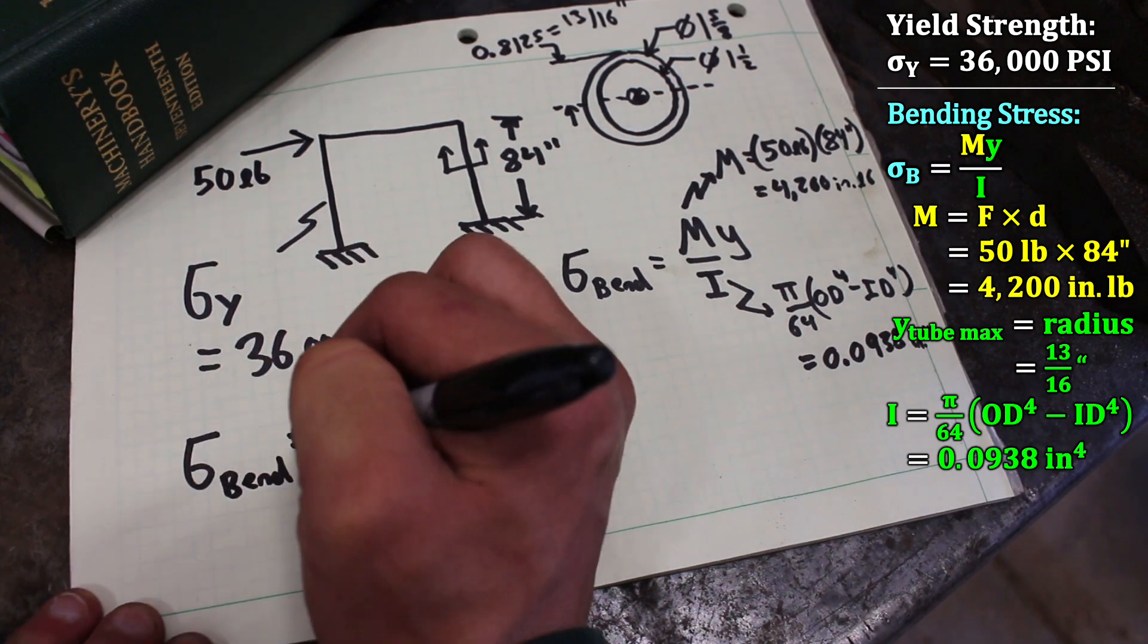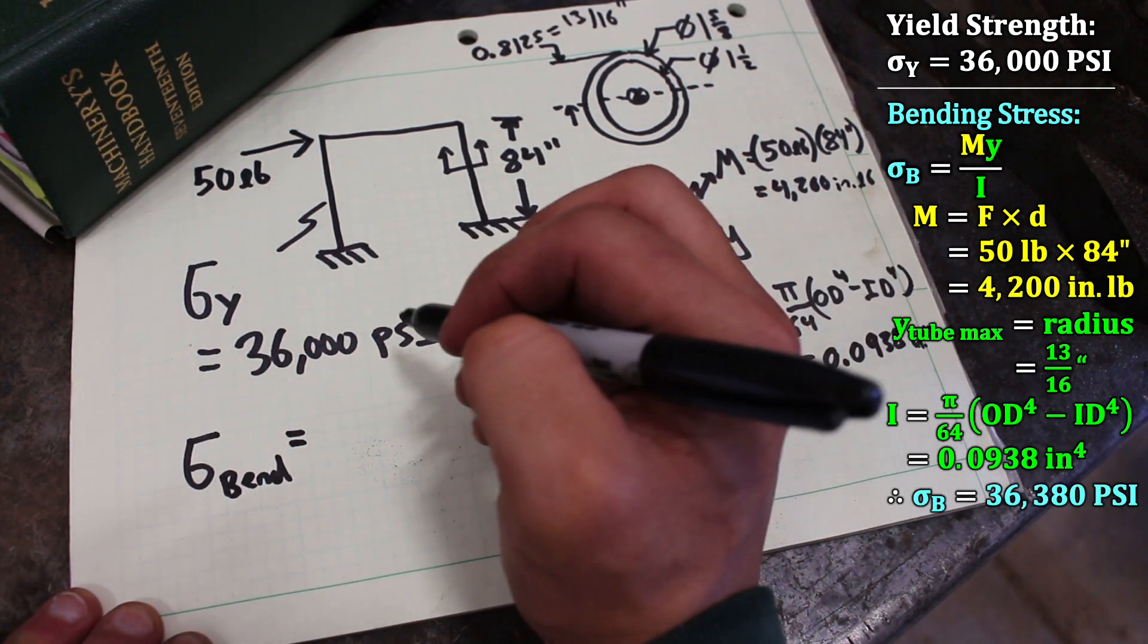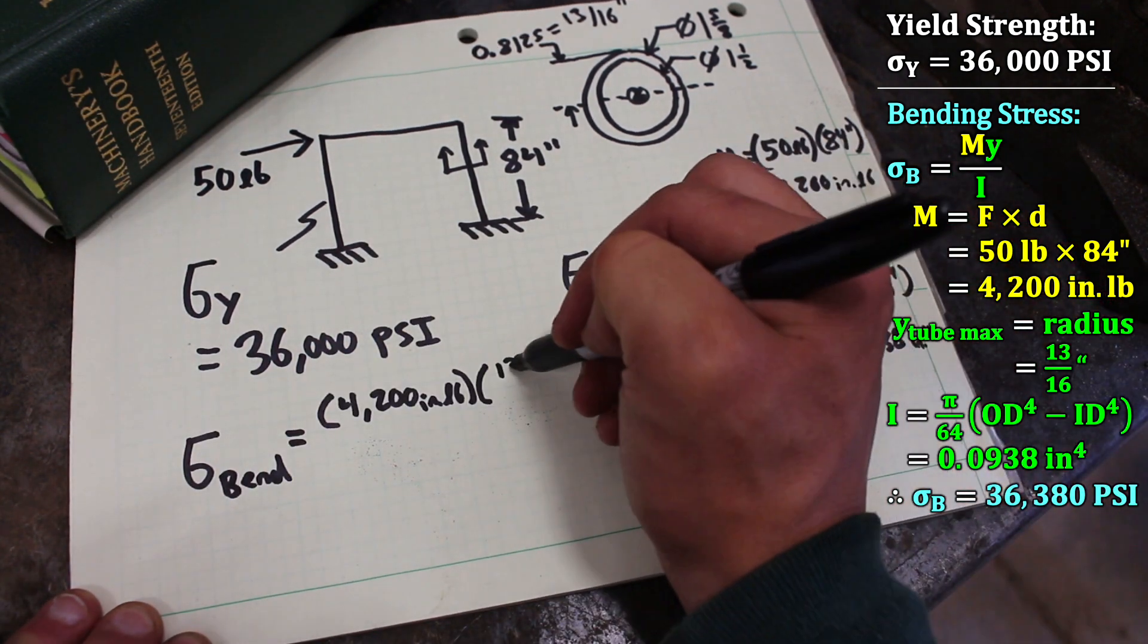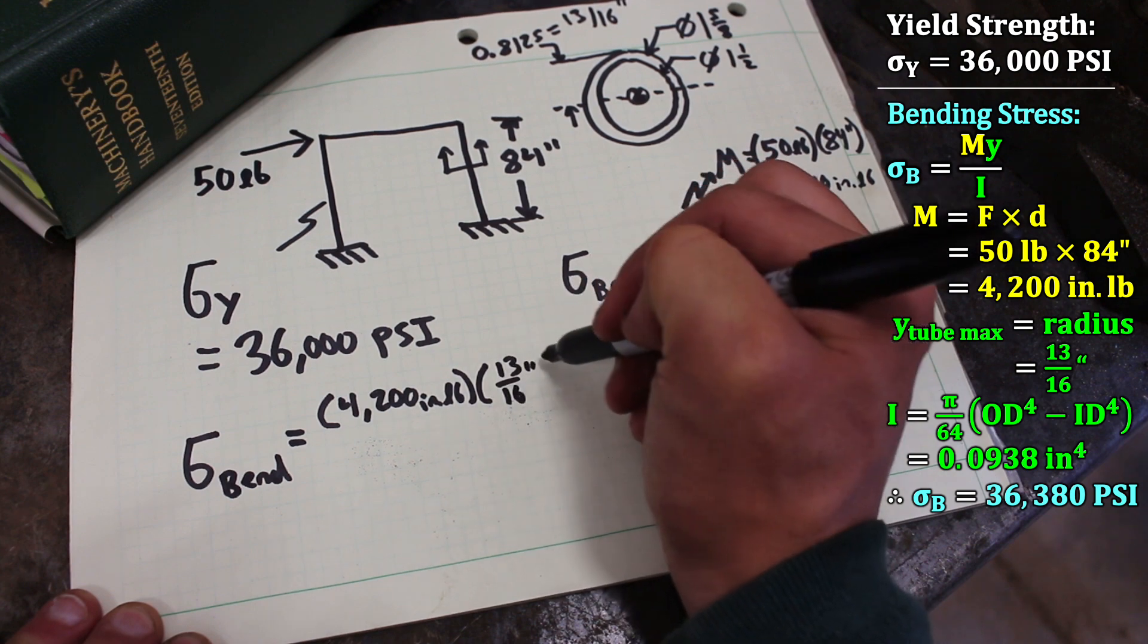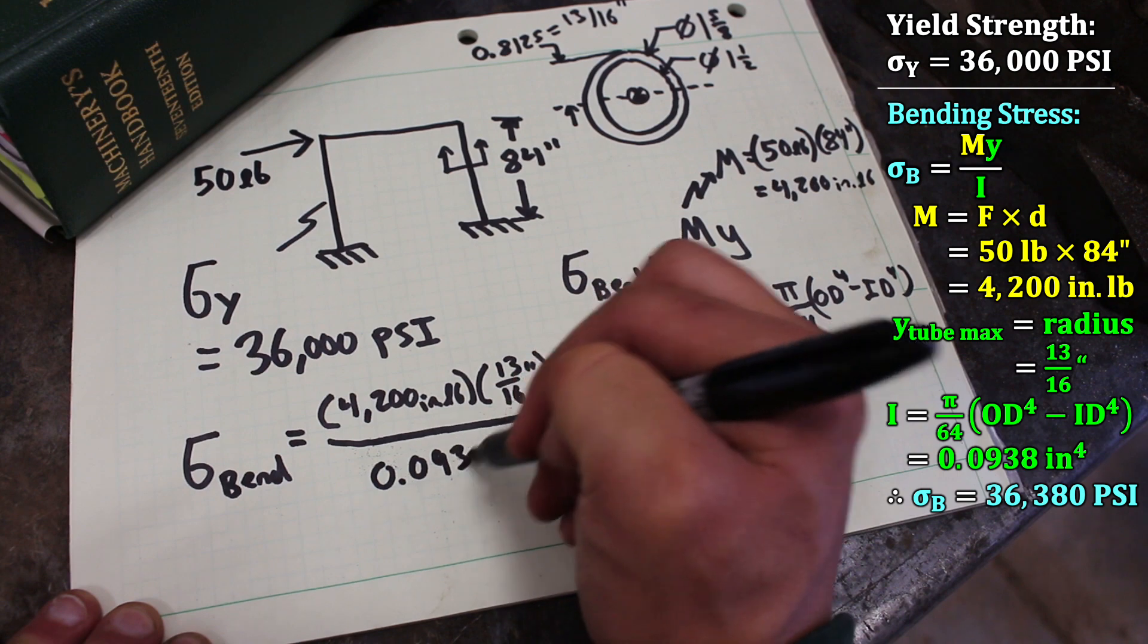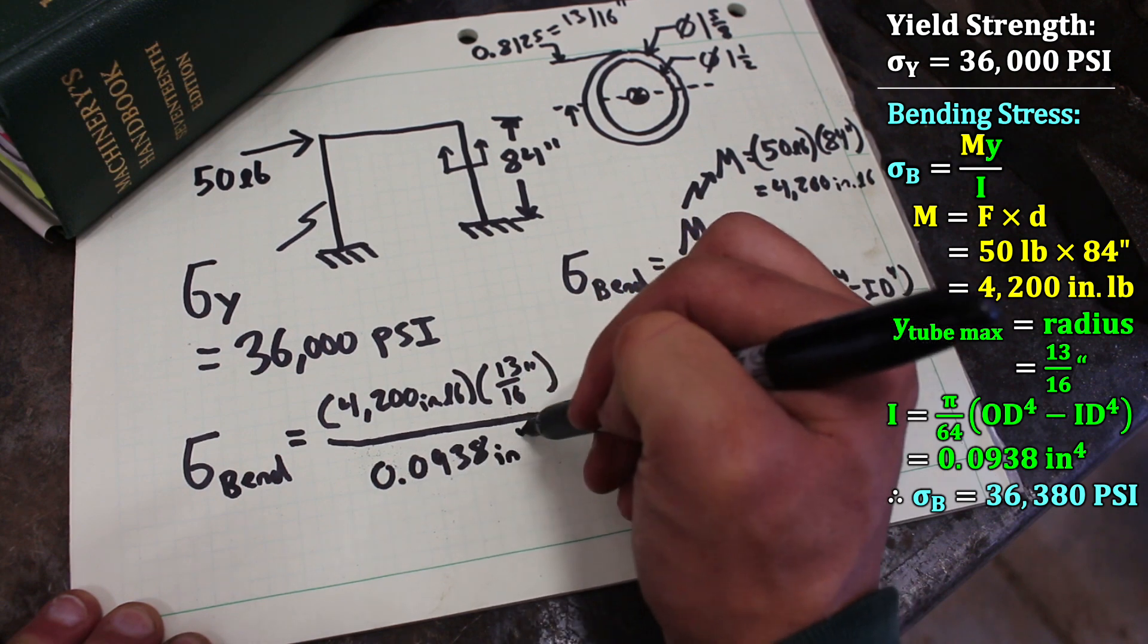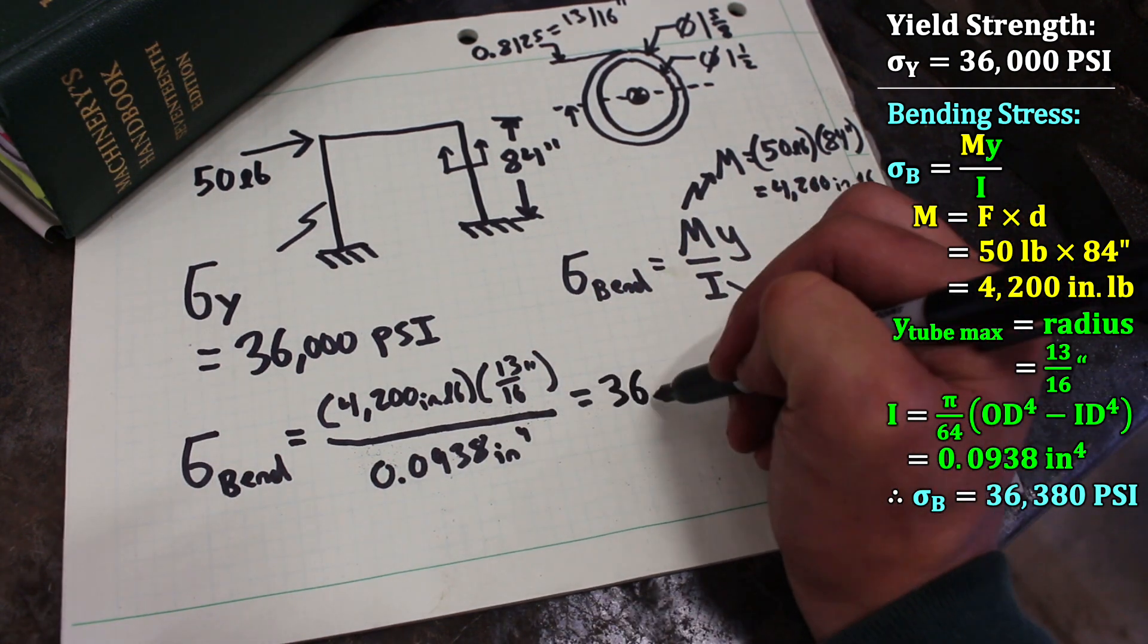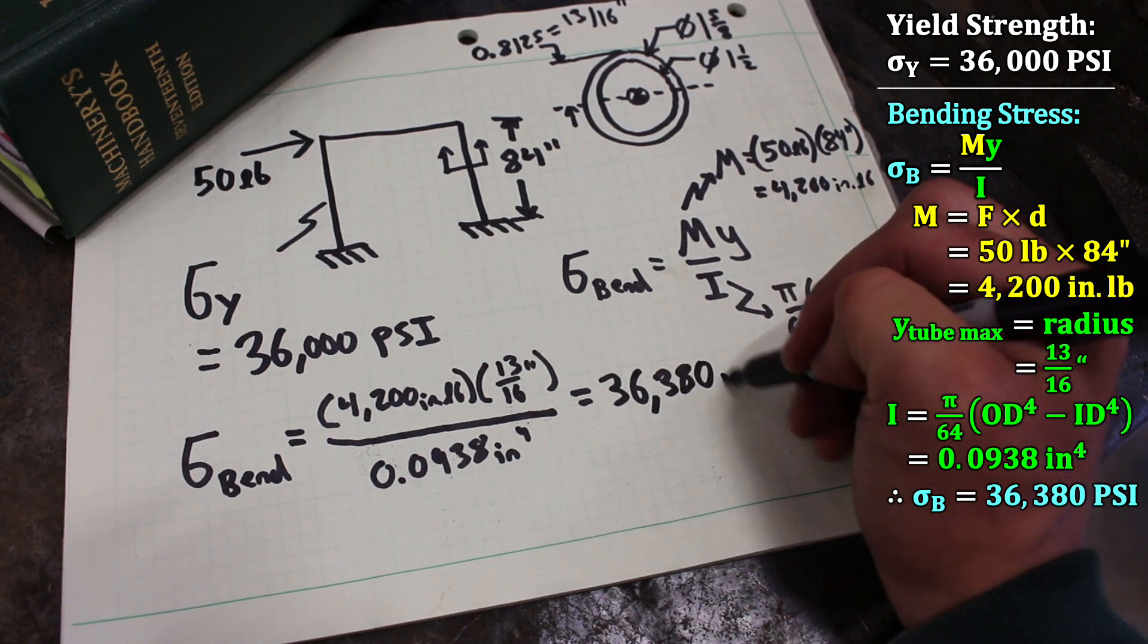Plugging all that in we get that our bending stress is 4,200 inch pounds times 13 sixteenths of an inch all divided by 0.0938 inches to the fourth and we get 36,380 psi.